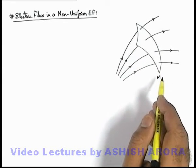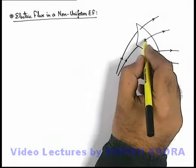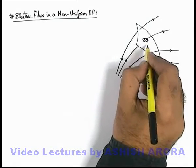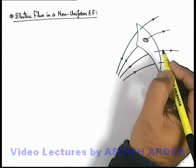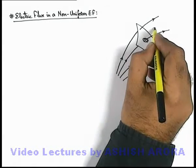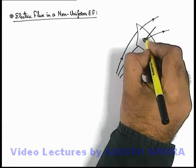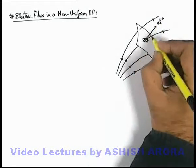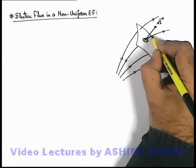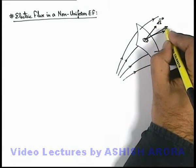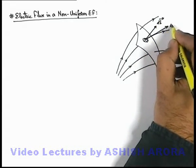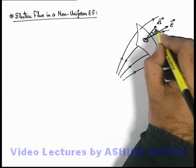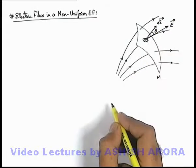In this situation, we consider a small elemental area dS on the surface, of which the outward vector can be taken as dS vector. The direction of the electric field in this region is E vector, and say the angle between the two is theta.